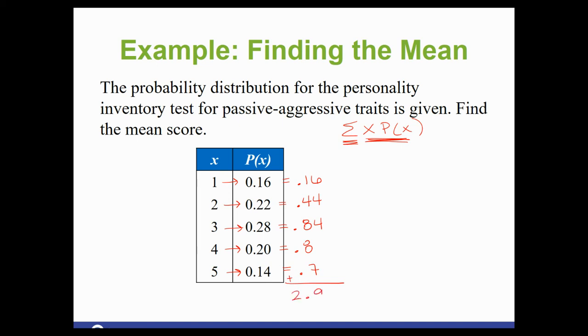And I get 2.94. That's the mean. Now sometimes that throws people off because we're so used to dividing by something at the end. But there's no divide on this one. Just x times p and add them up. That is our mean.